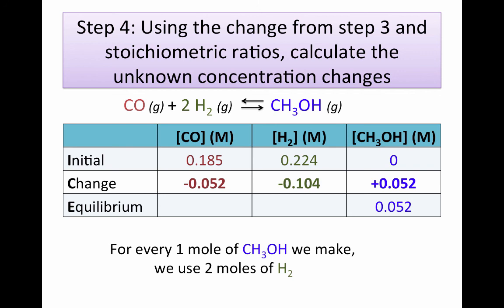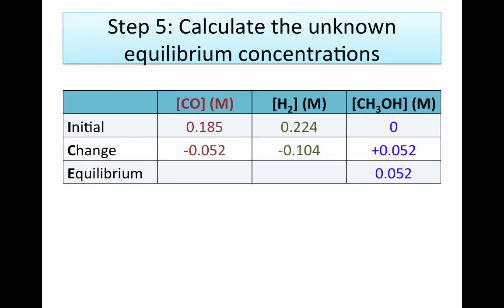Now let's calculate the equilibrium concentrations. We started with 0.185 molar of carbon monoxide and decreased that by 0.052, giving us 0.133 molar. We started with 0.224 molar of hydrogen gas and decreased that by 0.104, giving us 0.120 molar.